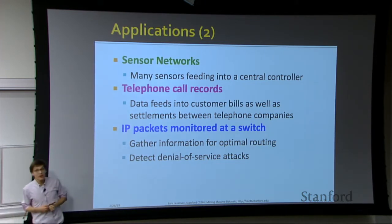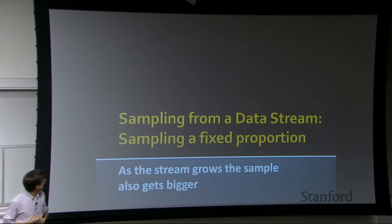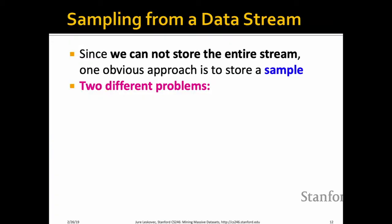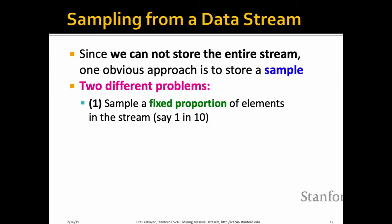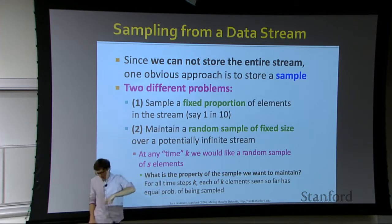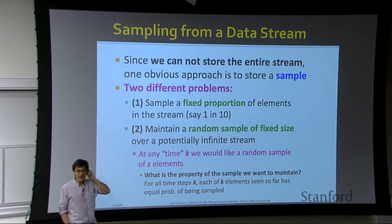The first topic is sampling from a data stream. You want to sample a fixed proportion of elements from the stream, so as the stream gets bigger the sample also gets bigger. One strategy: since you cannot store the entire stream, create a sample. An element comes in, you flip a coin and decide to save or discard it.